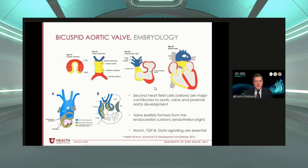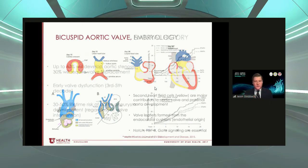I wanted to touch on embryology, mostly to introduce the concept of bicuspid aortopathy. The yellow area in the top figure represents the second heart field cells, which fill in and form the aortic root, the first portion of the aorta, and the aortic valve. The leaflets themselves are formed from the endocardial cushions from the endothelial layer. The aorta, aortic root, and aortic valve are all very closely related embryologically, which ties in when you have problems leading to bicuspid aortic valve — the aorta is often abnormal as well.